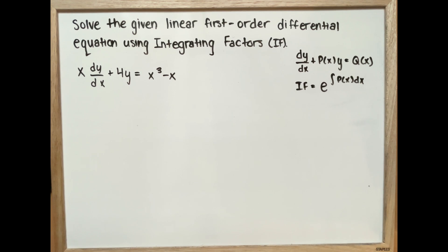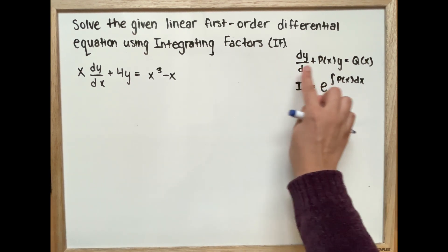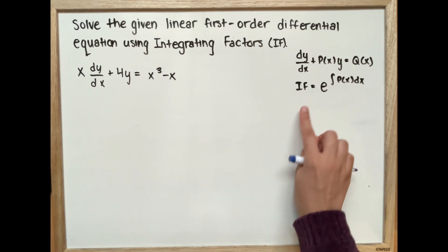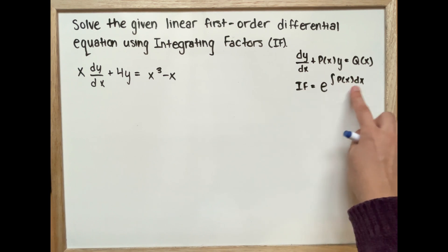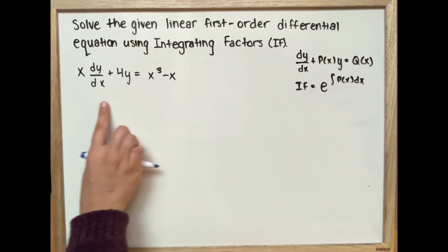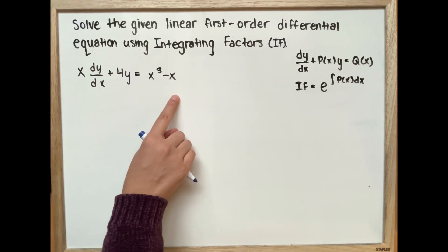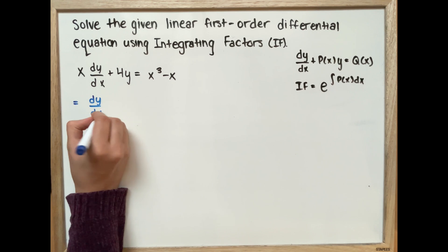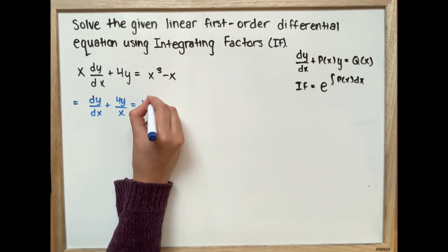In order to identify it as a first-order differential equation, it has to be in the form dy over dx plus P(x) times y equal to Q(x). Our first step is to rewrite this in that form by dividing through by x, giving us dy over dx plus 4y over x is equal to x squared minus 1.